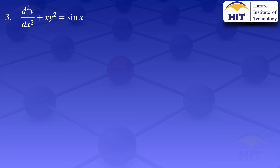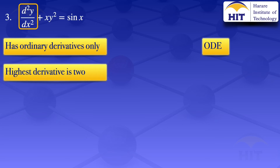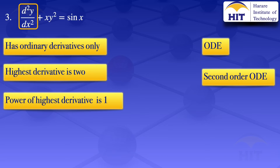Moving on to question number three: the second derivative of y with respect to x plus x y squared equals sine x. In this case y is the dependent variable and x is the independent variable. The equation has only ordinary derivatives, therefore it is an ordinary differential equation. The highest derivative is 2, so the order is second order, and the power of the highest derivative is 1, therefore the degree is 1.